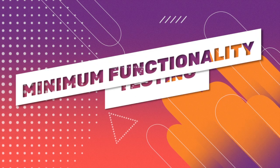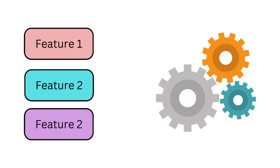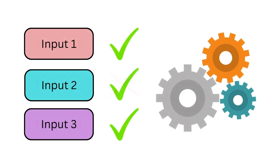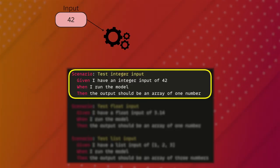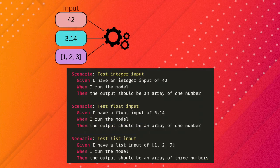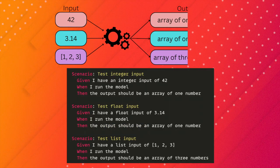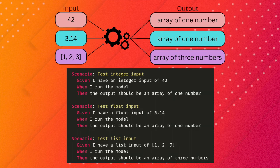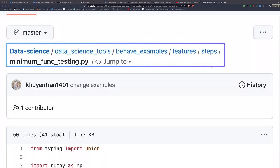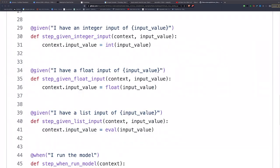Minimum functionality testing verifies if the system or product meets the minimum requirements and is functional for its intended use. One example is to check whether the model can handle different types of inputs such as an integer, a float, or a list. In all these scenarios, the output is expected to be an array of one or three numbers depending on the input type. The Python implementation for these scenarios can be found at the link in the description.